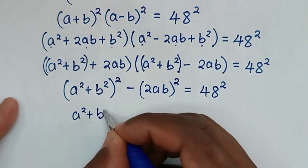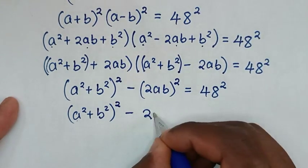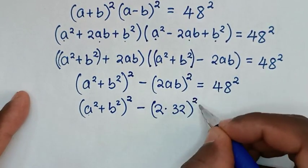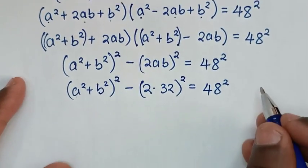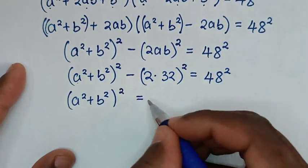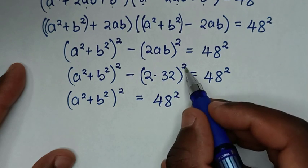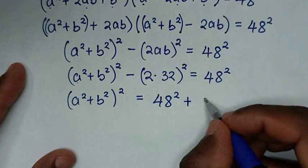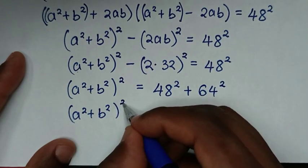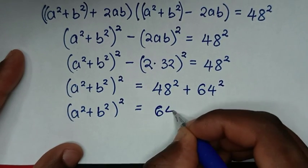Then in the next step, it will be a squared plus b squared minus 2ab, where ab is 32, so 2ab equals 64. So it becomes a squared plus b squared minus 64, bracket squared, equals 48 squared. We take 64 squared to the other side, so a squared plus b squared bracket squared equals 48 squared plus 64 squared, which equals 6400.